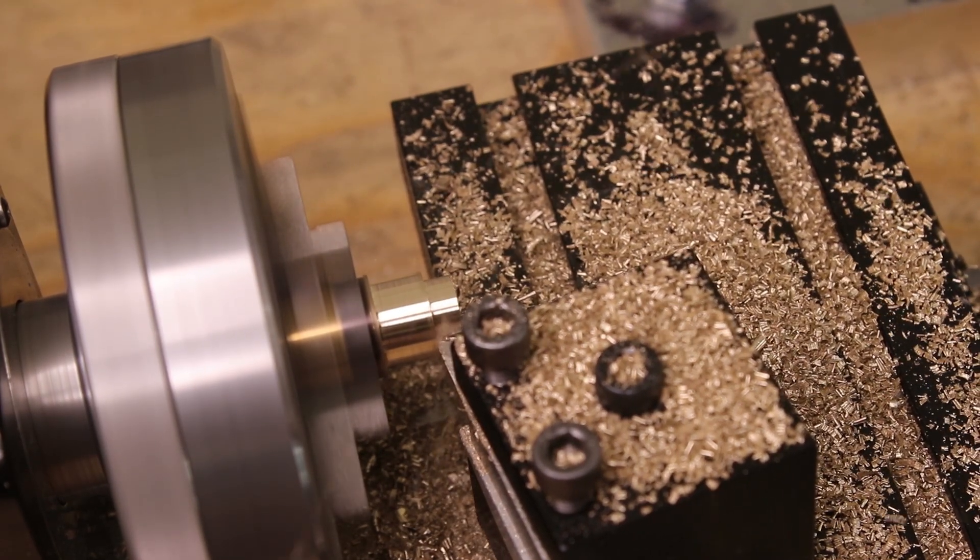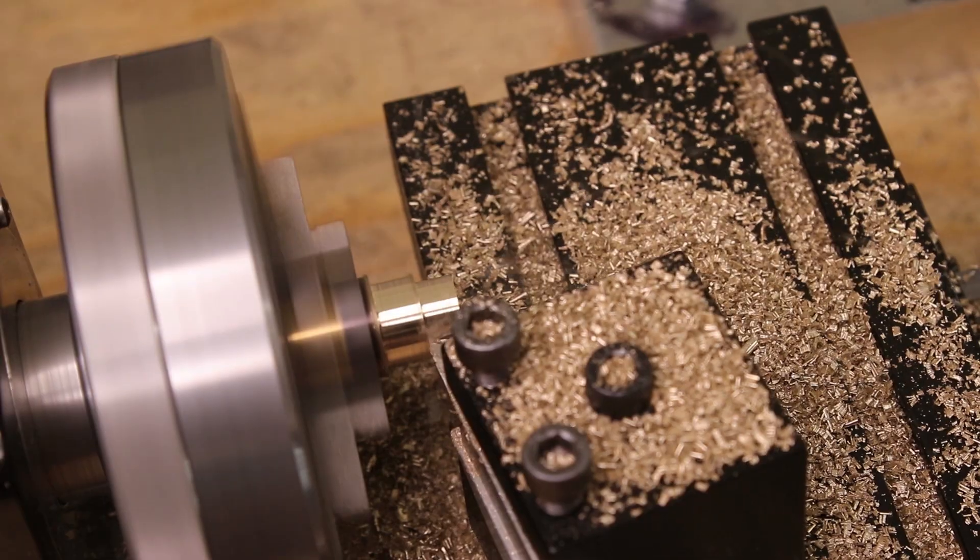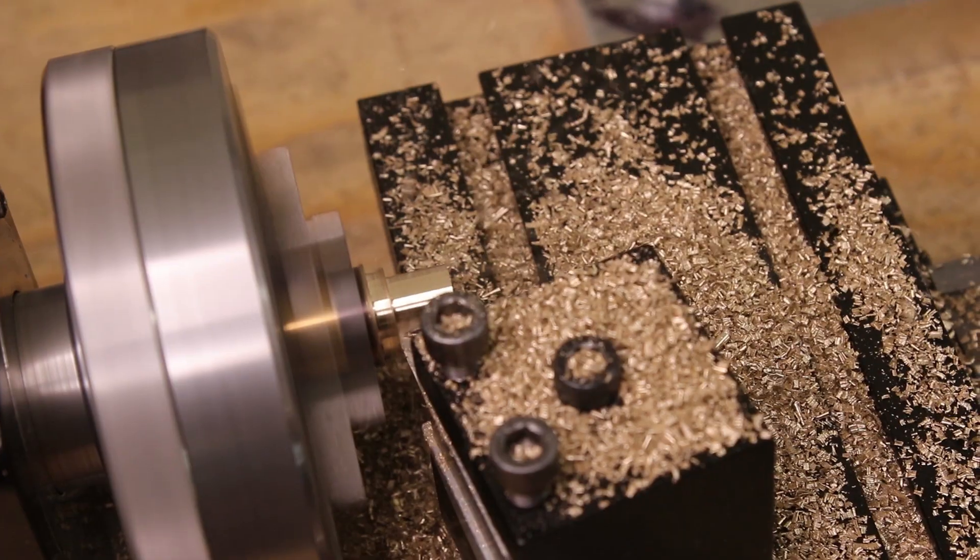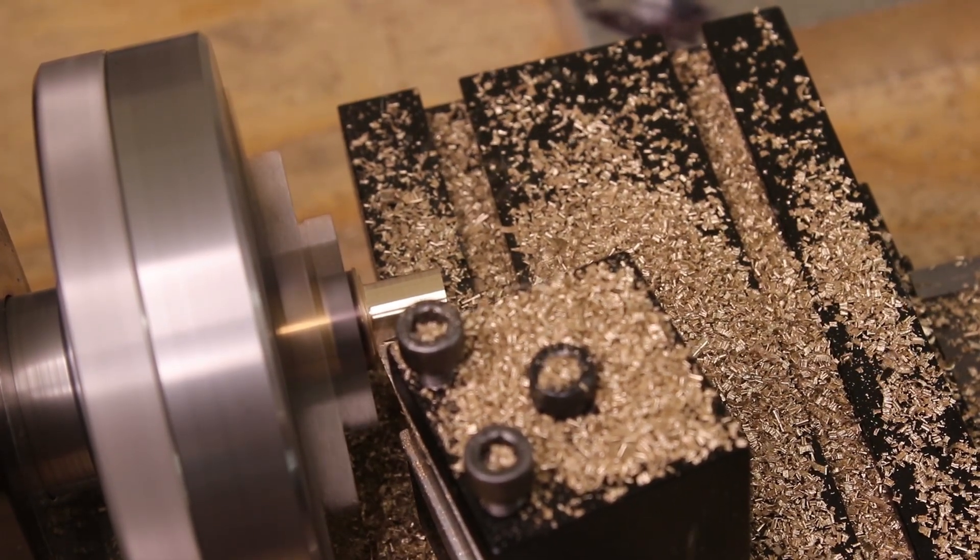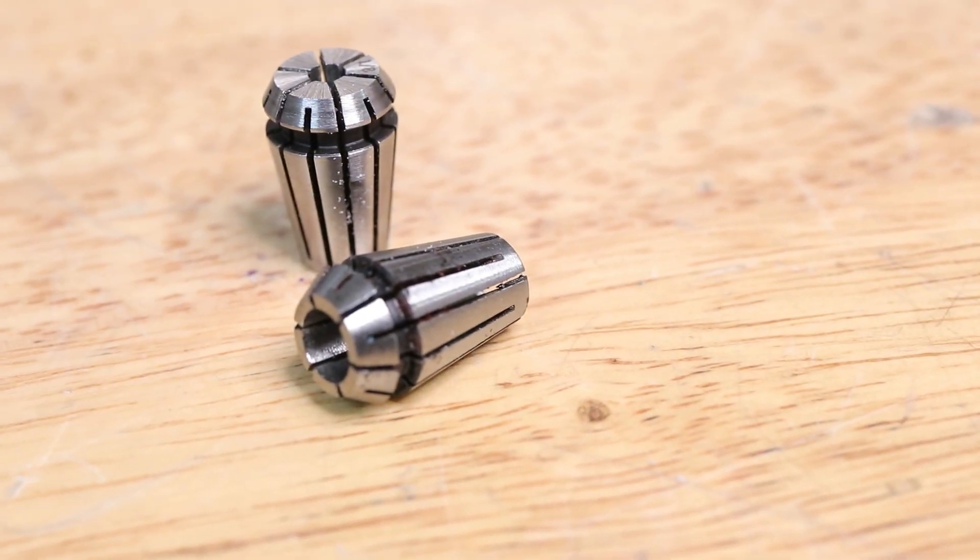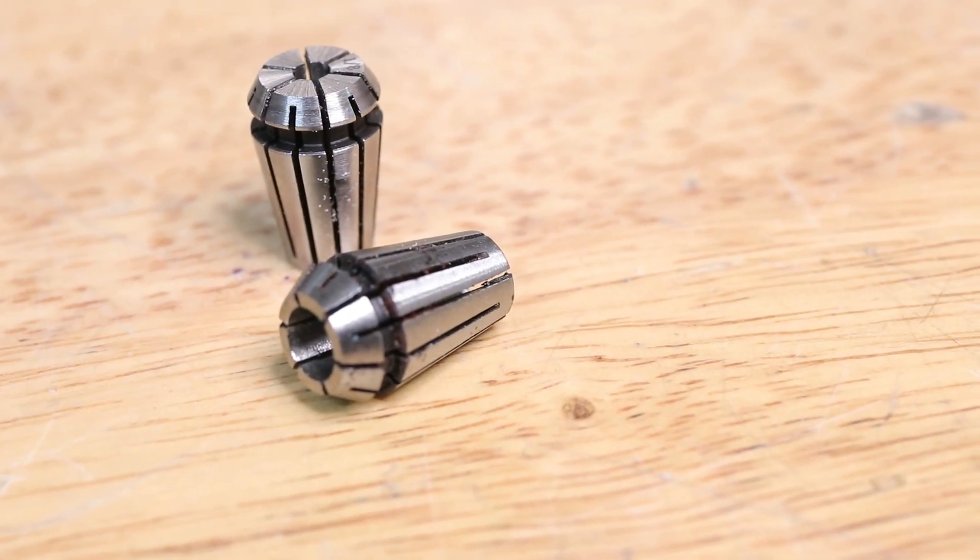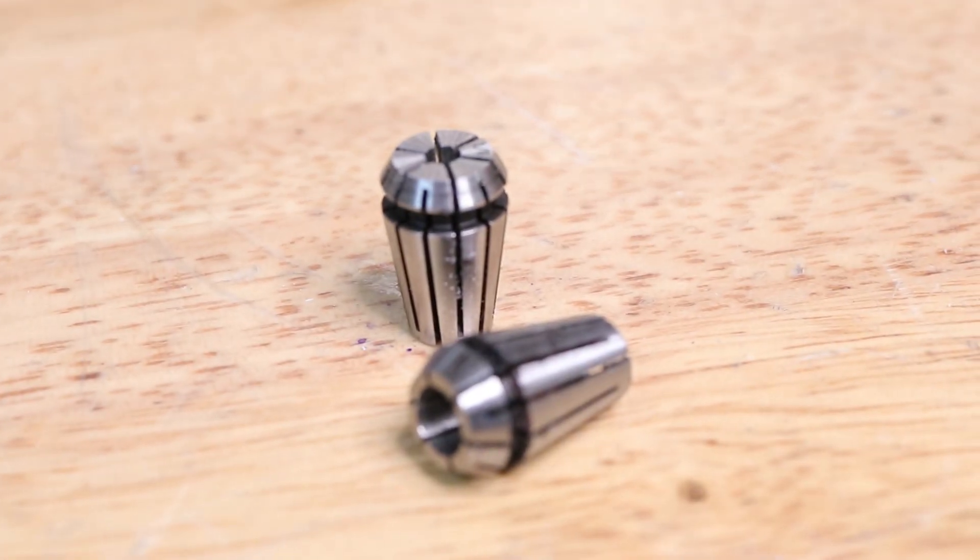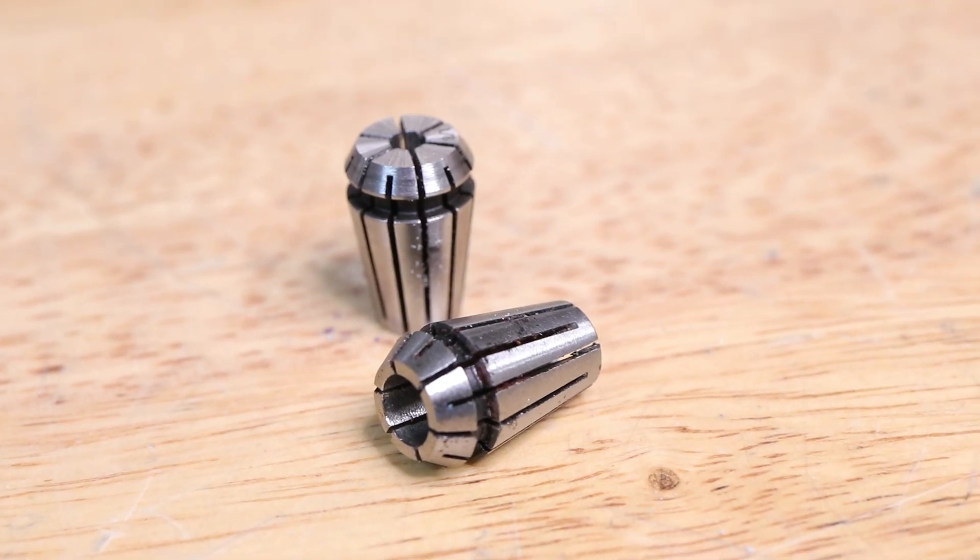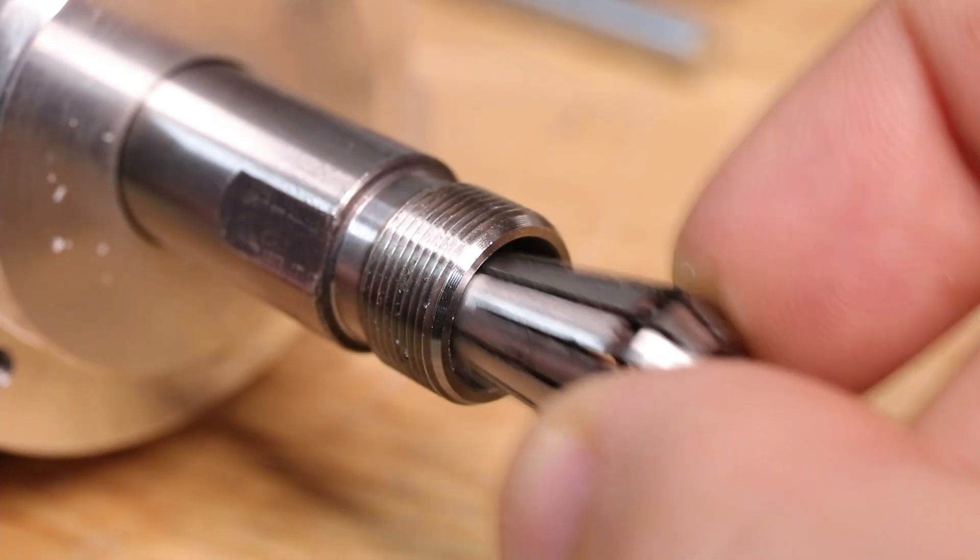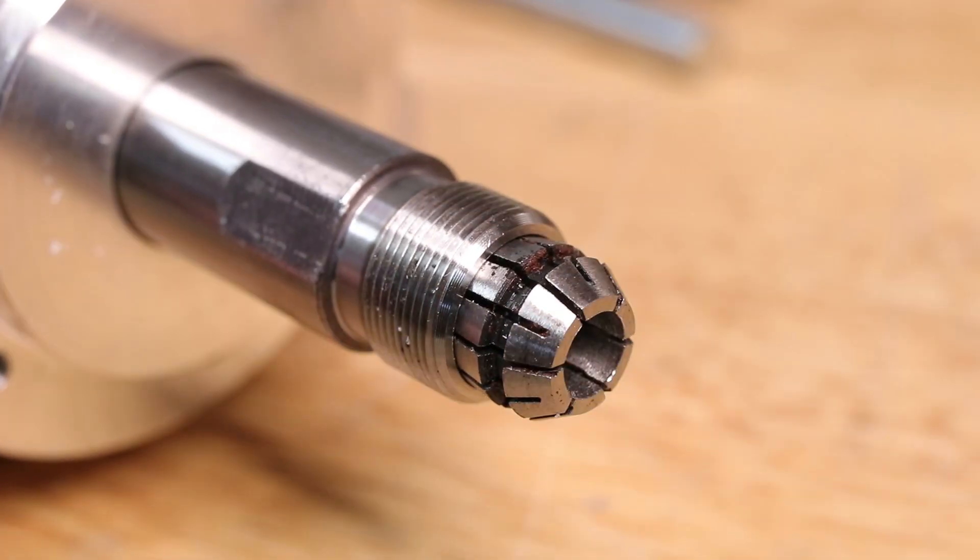In this project I'll be making a collet chuck for the Sherline lathe since it is a much more precise machine than the big lathe and the parts that I want to machine using the collet chuck need to be pretty precise. If you've used collets before you would know that they don't have a huge span of range in terms of the size of parts they can hold. For instance this six millimeter collet can hold parts five to six millimeters in diameter. Anything more or less will require the purchase of a new collet. Thankfully for me I'll be making use of the collets that I already own so I won't have to buy any more.